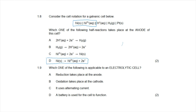Question 1.9 asks which statement is applicable to an electrolytic cell. The correct answer is D: a battery is used for the cell to function. Option A is incorrect because reduction takes place at the cathode, not the anode. Option B is incorrect because oxidation takes place at the anode, not the cathode. Option C is incorrect because direct current is required for an electrolytic cell.